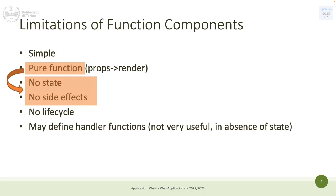We have function components. These function components have clear advantages: they are simple because it's just a function that returns something to be rendered. They are pure functions — whatever they receive, they render. Being pure functions, they should not have any state and should not have any side effects. Whatever they receive, every time they are invoked, they will produce the same result given the same input.